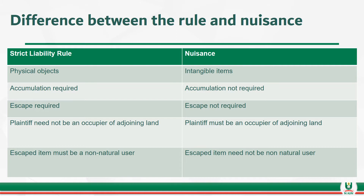Now let's differentiate between strict liability and nuisance. For strict liability, physical objects are introduced — not the same for nuisance, where intangible items like noise and smoke can also constitute nuisance. There is also a need for accumulation for strict liability, and then an escape of that physical object, which is not required for nuisance. What escapes must be a non-natural user. And the plaintiff does not need to be an occupier of the adjoining land for there to be strict liability, whereas adjacency of parties is important for nuisance.